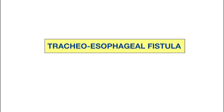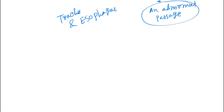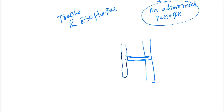Hello friends, today our topic is tracheoesophageal fistula. A fistula is an abnormal passage — in this case, an abnormal passage between the trachea and the esophagus. Here, this is the esophagus and this is the trachea, and there will be a presence of a passage between them.